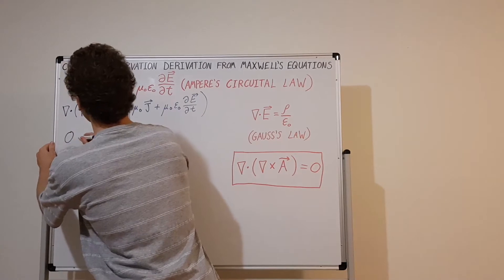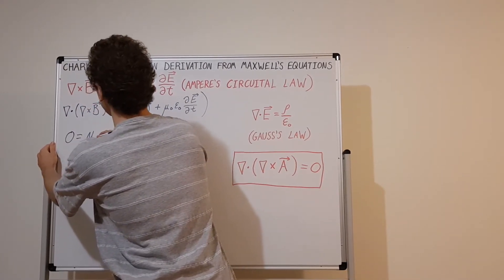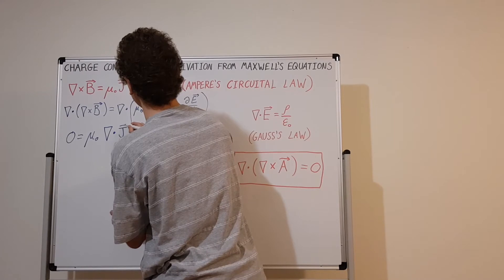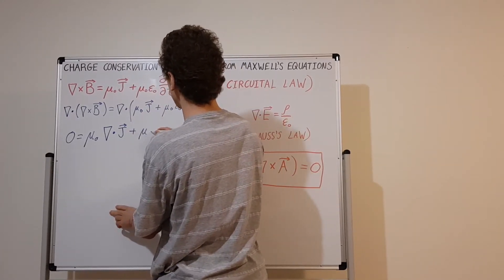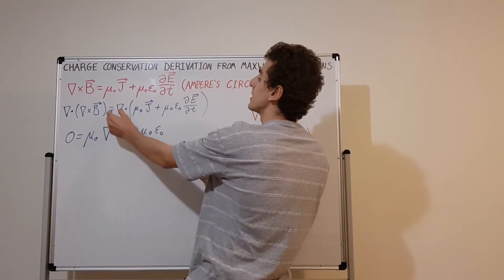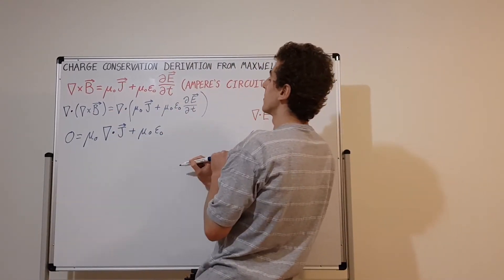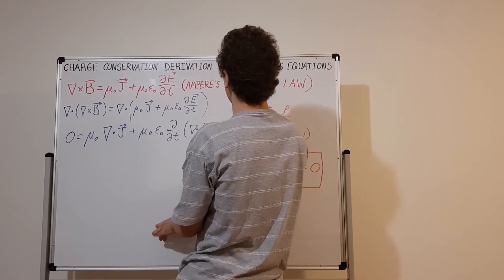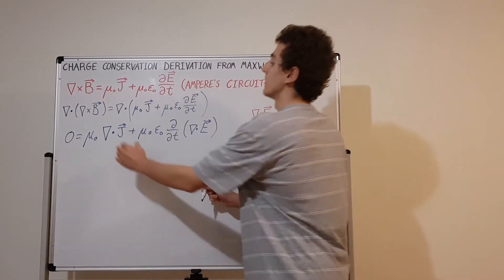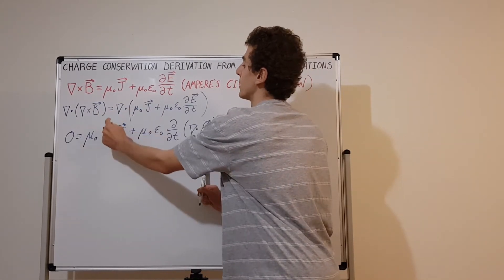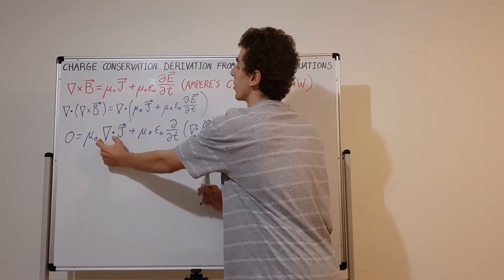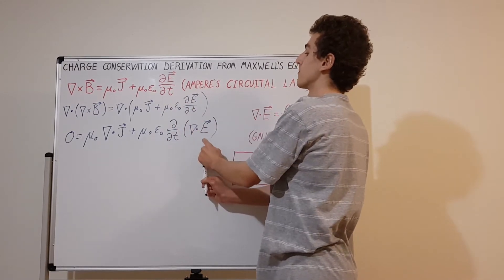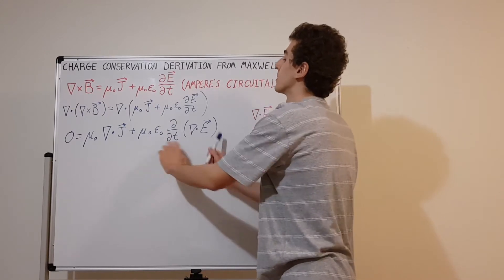Rewriting, we have zero equals mu-nought times the divergence of J (the current density vector), plus mu-nought epsilon-nought times the partial derivative of the divergence of the electric field. We've taken the constants out front and moved the divergence operator inside, where it acts directly on the electric field, with the partial derivative still applied afterward.